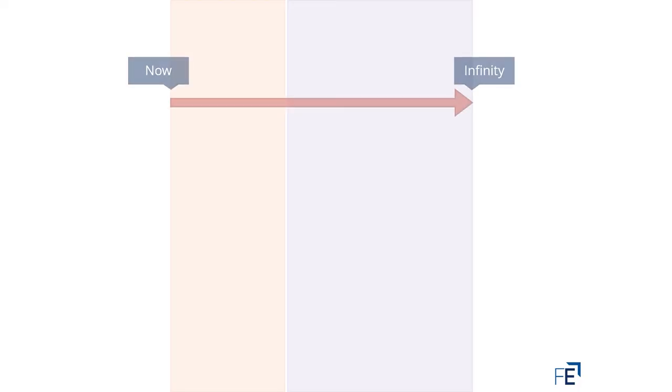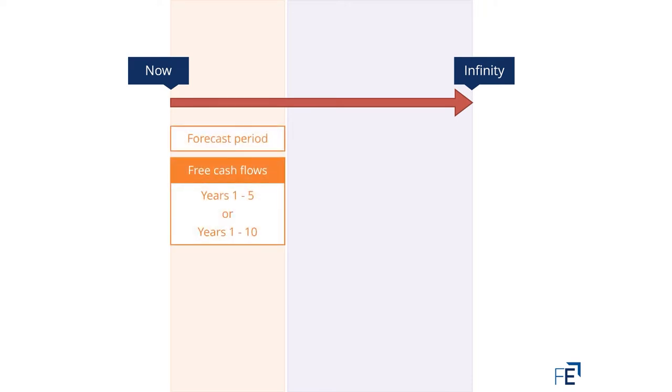If we think about where all of our cash flows are coming from in a DCF, they're coming from now until infinity. In the first forecast period, we come up with our free cash flows, so that details cash flow calculations either from years one to five or from years one to ten.